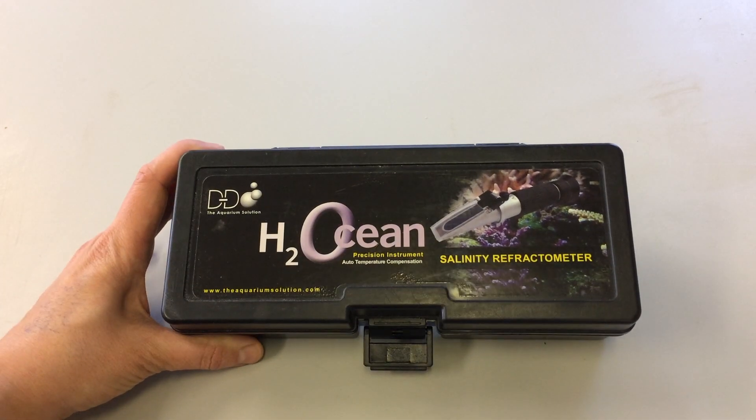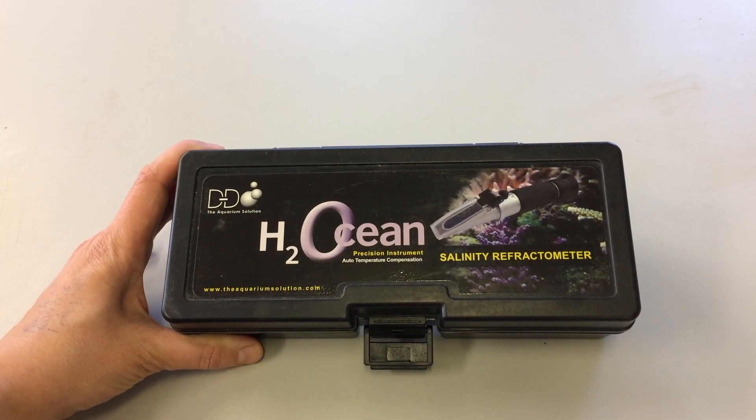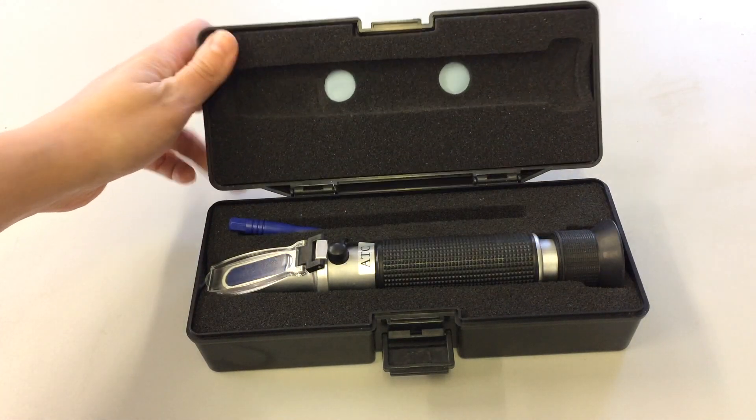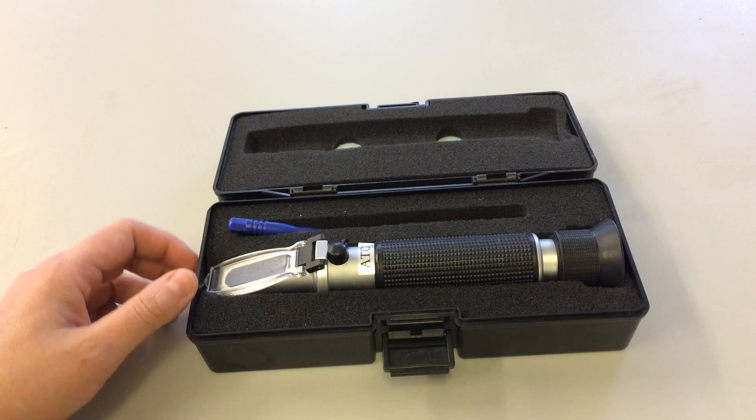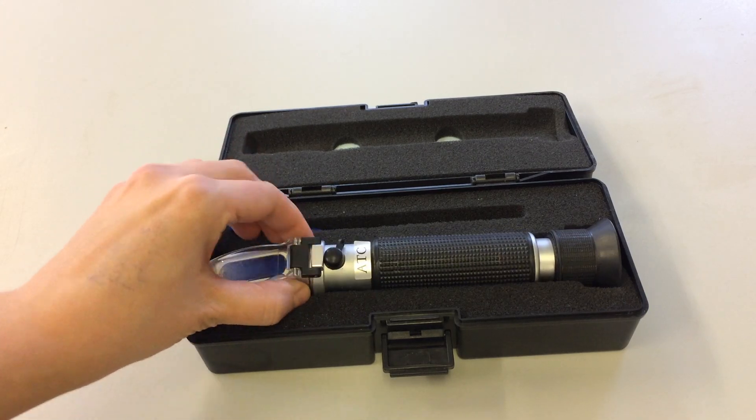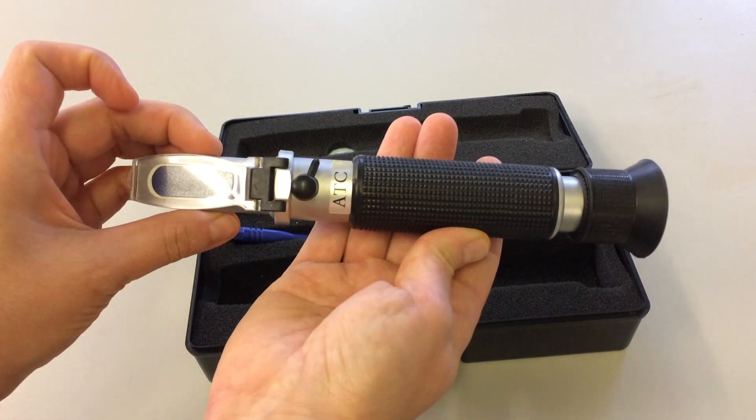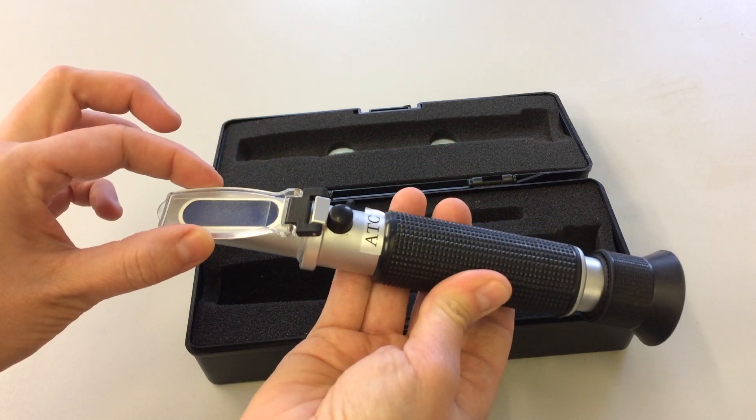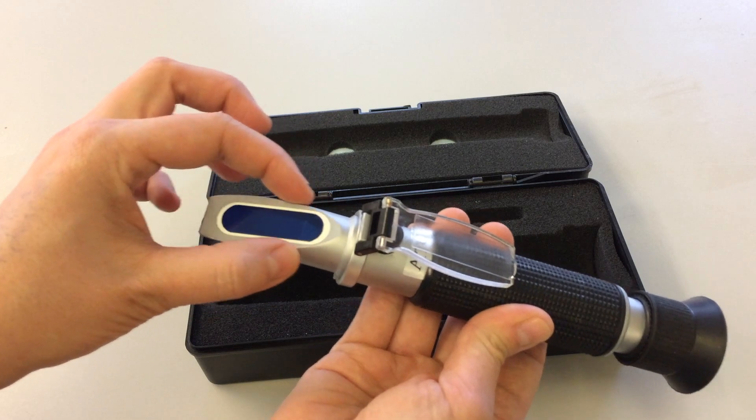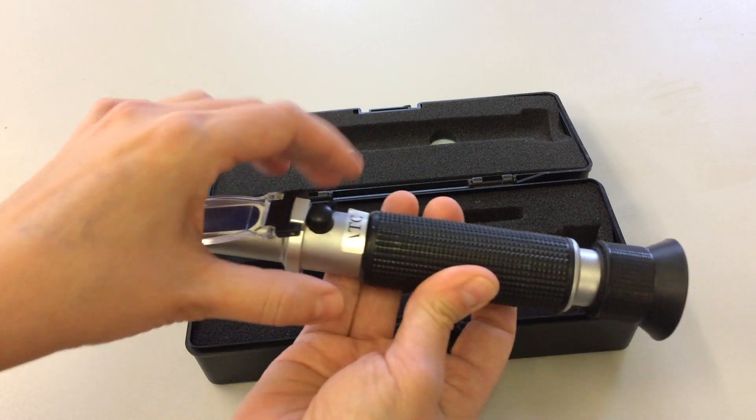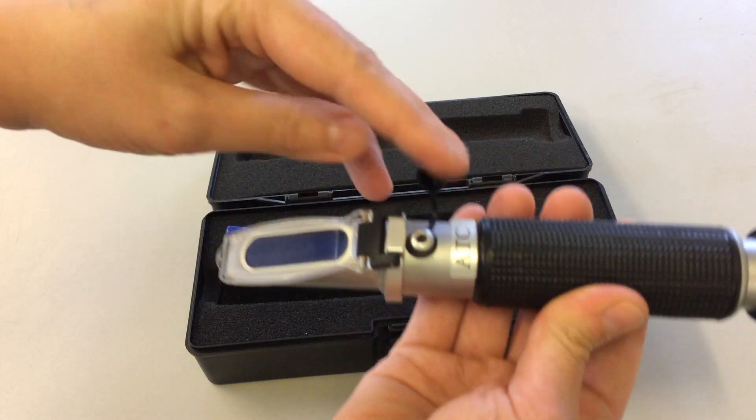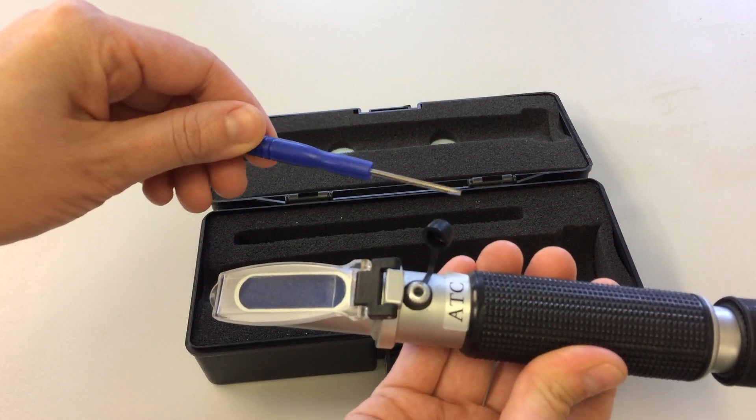Okay, here we have a handheld refractometer to measure salinity. These models are very easy to use. It's a small handheld device with an area where we can put a seawater sample on top of a glass section here. Underneath this section we have a small screw.